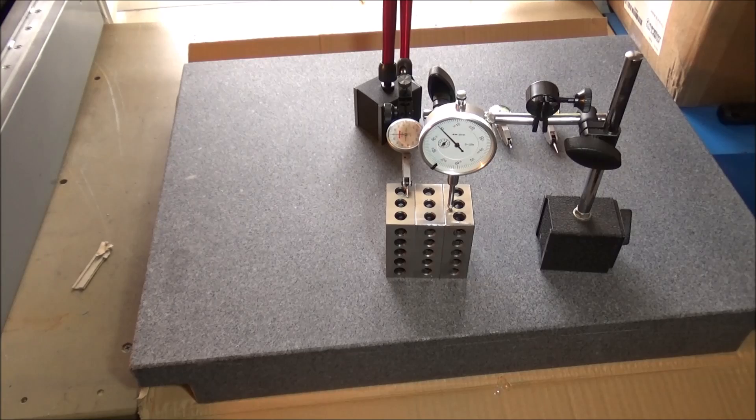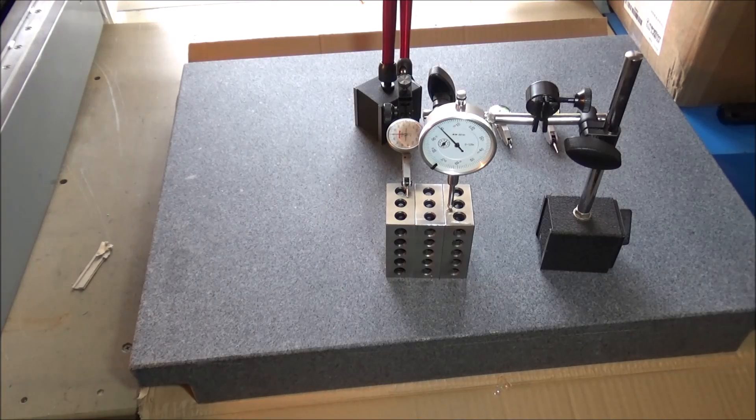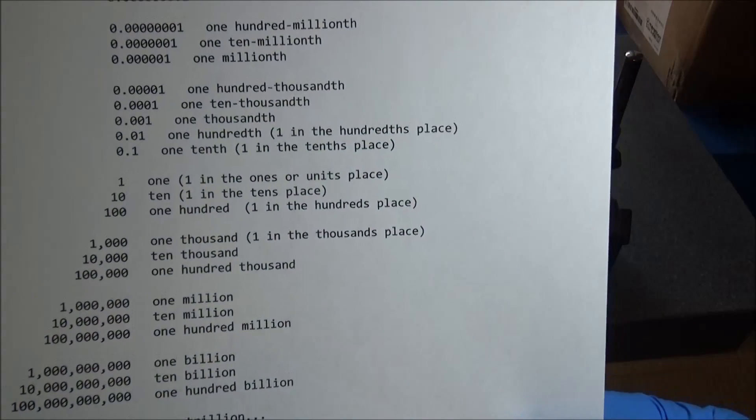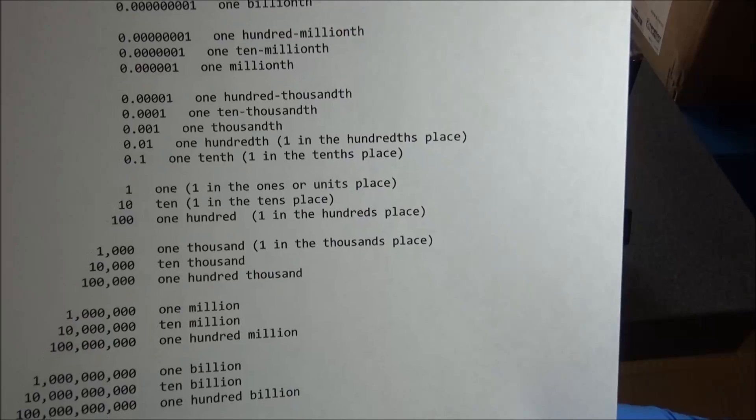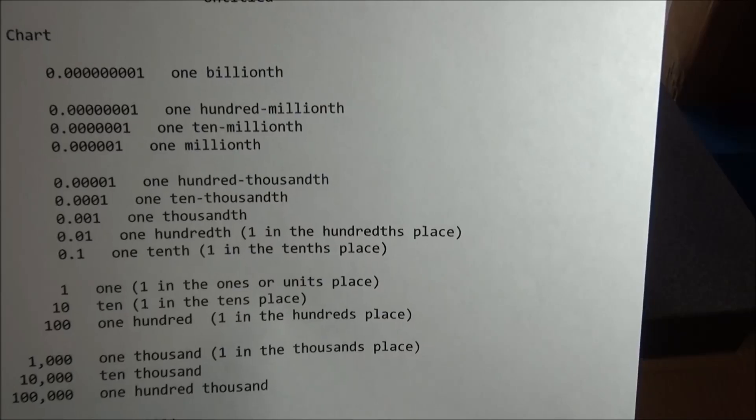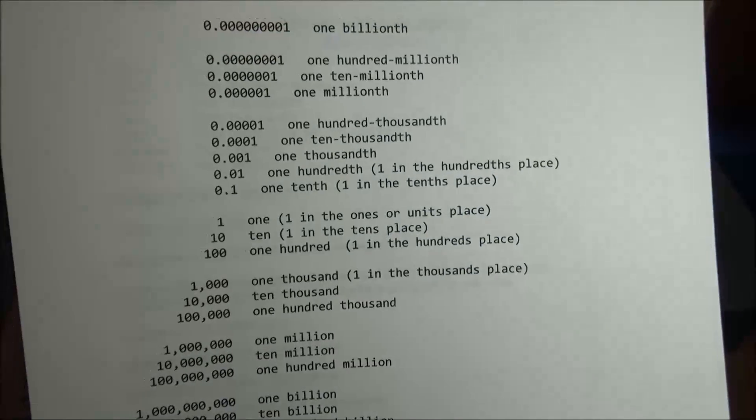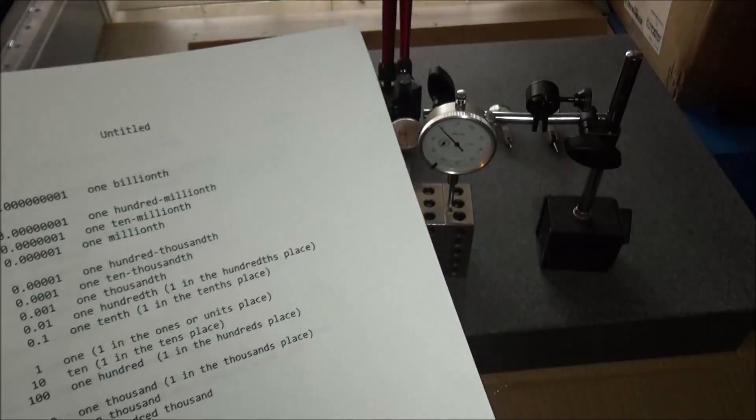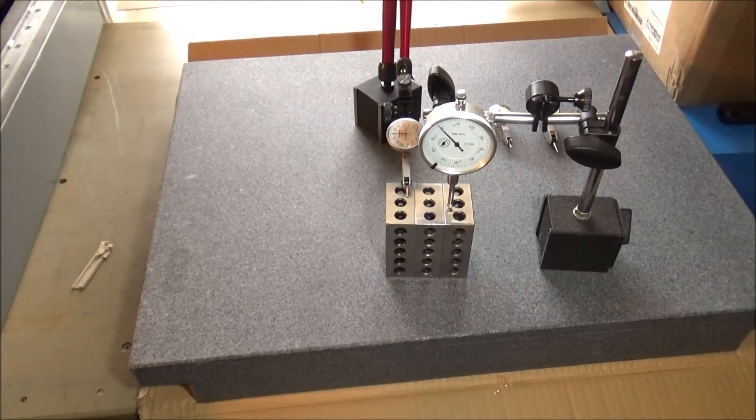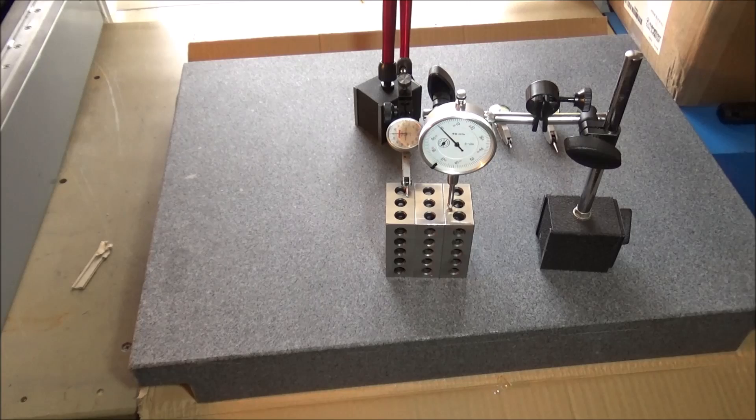I remember back in school learning our place value - tens, hundreds, thousands, and then one tenth, one hundredth, one thousandth, one ten thousandth. Then that brought up millions, so it gets confusing if you're not used to the terminology.